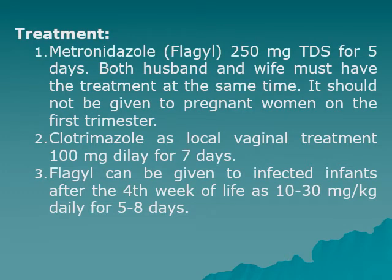Treatment: Metronidazole (Flagyl), 250 to 500 mg three times daily for five days. Both partners must be treated simultaneously. It should not be given during the first trimester of pregnancy. Fluconazole as local vaginal treatment can be given daily for seven days. For infected infants after the fourth week of life, Flagyl can be given at 10 to 30 mg per kg body weight daily for five to eight days.